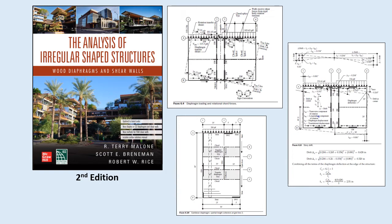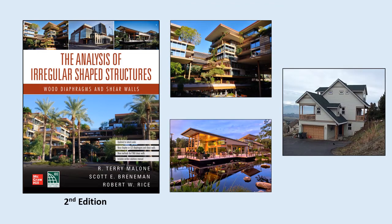Most of the examples in this book are based on light wood frame construction using diaphragms that can be idealized as flexible. However, the second edition also includes new chapters that address lateral force-resisting systems using cross-laminated timber. The information presented is intended to serve as a guideline for recognizing irregularities and developing the procedures necessary to resolve the forces along complicated load paths. The methods and examples included are intended to provide the design professional with reasonable and rational analytical tools that can be used to solve complex problems, but are not intended to represent the only methods available.